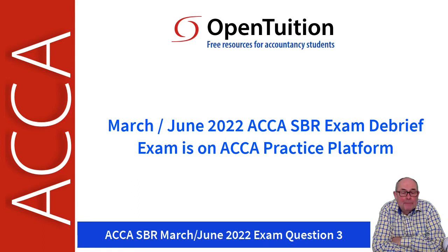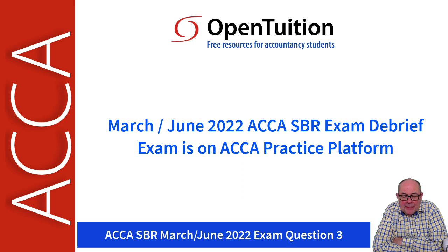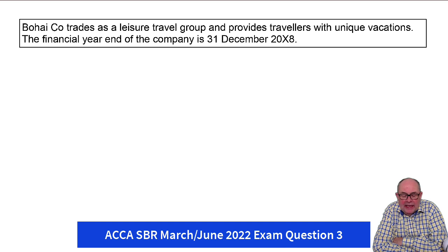This is question three from the exam, Bohai. We're told in the introduction that the year end is December and they work in the vacation industry. So that's the introduction to the question — very straightforward.